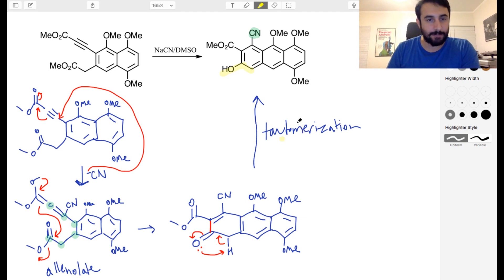Maybe daunting at first, but actually not that bad when you look at it. CN minus attacks the alkyne to give us the allenolate. And then the allenolate closes up this third six membered ring. And then we tautomerize from the keto to the enol form in order to get this aromatic tricyclic structure. So that is today's mechanism challenge.